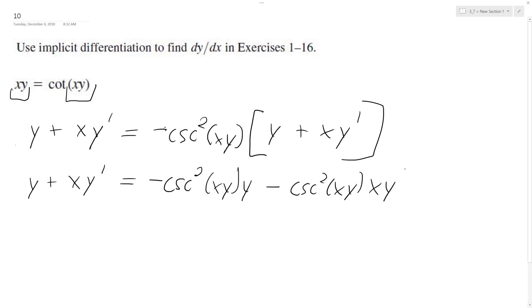Yep, y prime. All right, so get all the y primes on one side, so we end up with xy prime plus cosecant squared xy times xy prime is equal to negative y minus cosecant squared quantity xy times y.